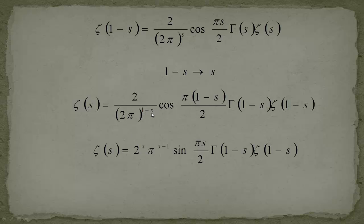Rewriting is simple: 2 to the (1−s) with the factor of 2 in the denominator cancels, giving 1 over 2^(−s), and pi to the (1−s) — bringing them up yields 2^s · π^(s−1). Rearranging these in the other order, we have finally arrived at the target statement.